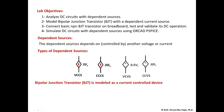If we look at the bipolar junction transistor as a device, it is modeled as a current controlled device. The symbol for the BJT transistor is shown here — this is what we call an NPN bipolar junction transistor. You can see that the arrow is leaving the transistor. The top terminal is called the collector, symbol C. The middle terminal is called the base, symbol B. The bottom terminal is called the emitter, symbol E. There is a base current IB going into the base, a collector current IC going into the collector, and an emitter current IE leaving the emitter.